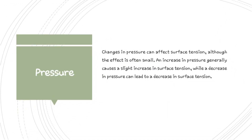The next factor is pressure. Change in pressure can affect surface tension. Although the effect is often small, an increase in pressure generally causes a slight increase in surface tension, while a decrease in pressure can lead to a decrease in surface tension. Consider a water droplet on the surface of a table or floor — if you gently press the droplet with your fingertip, you will notice the droplet flattening. The applied pressure reduces surface tension at the point of contact. Therefore, pressure has an impact on surface tension to a small extent.